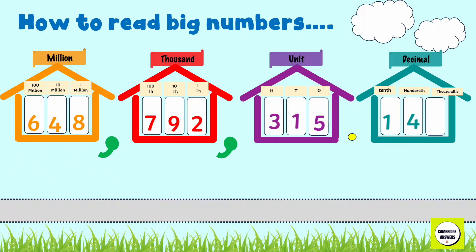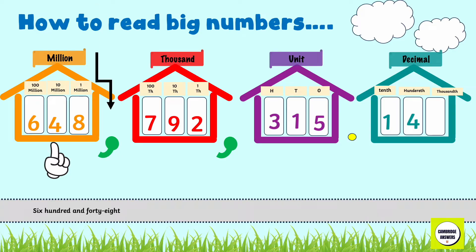Once the digits are placed in their houses, go to the first house — the million house. Ask yourself: who's in the house? The answer is 648. When you see the comma, you say the name of the house — million. So we have 648 million.